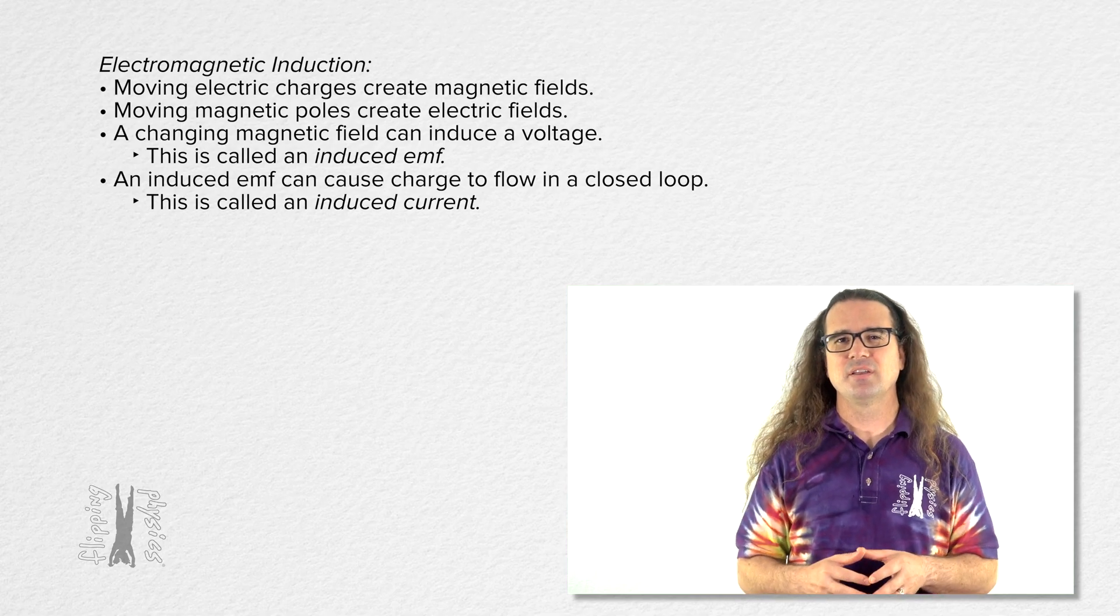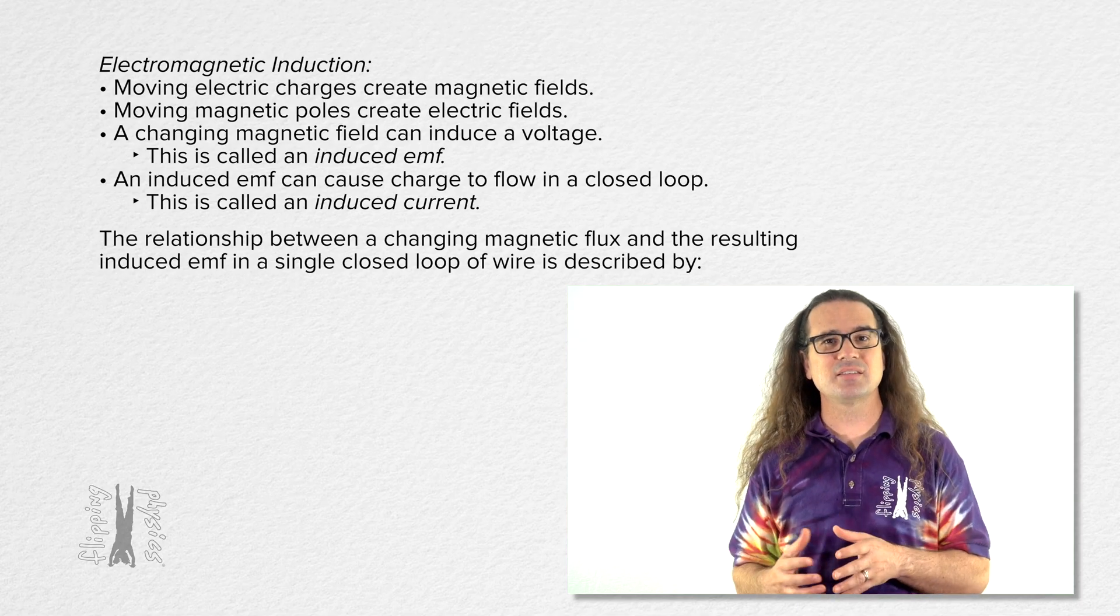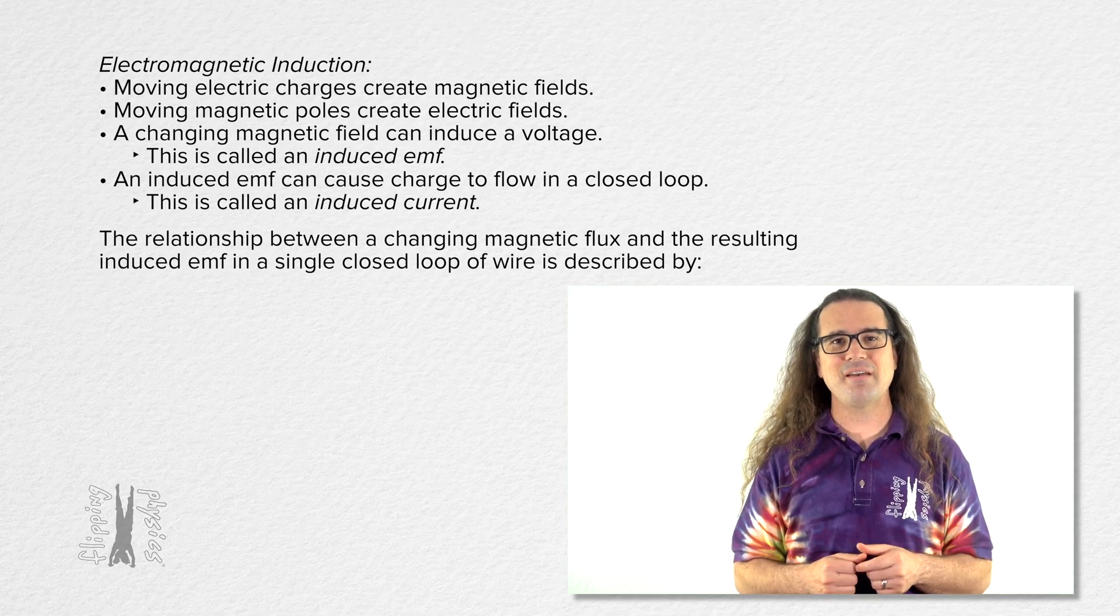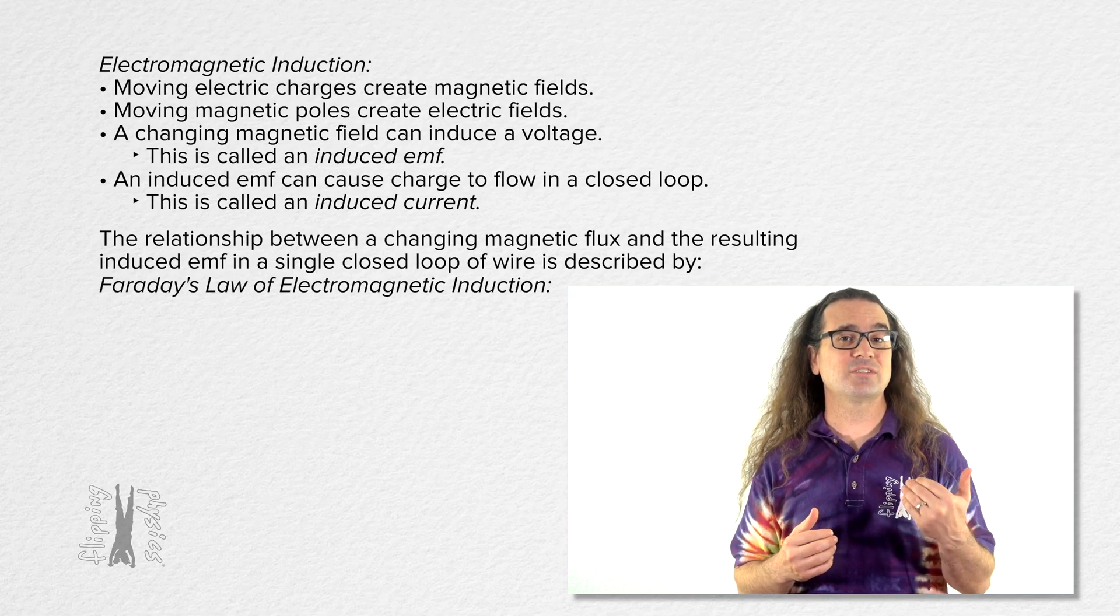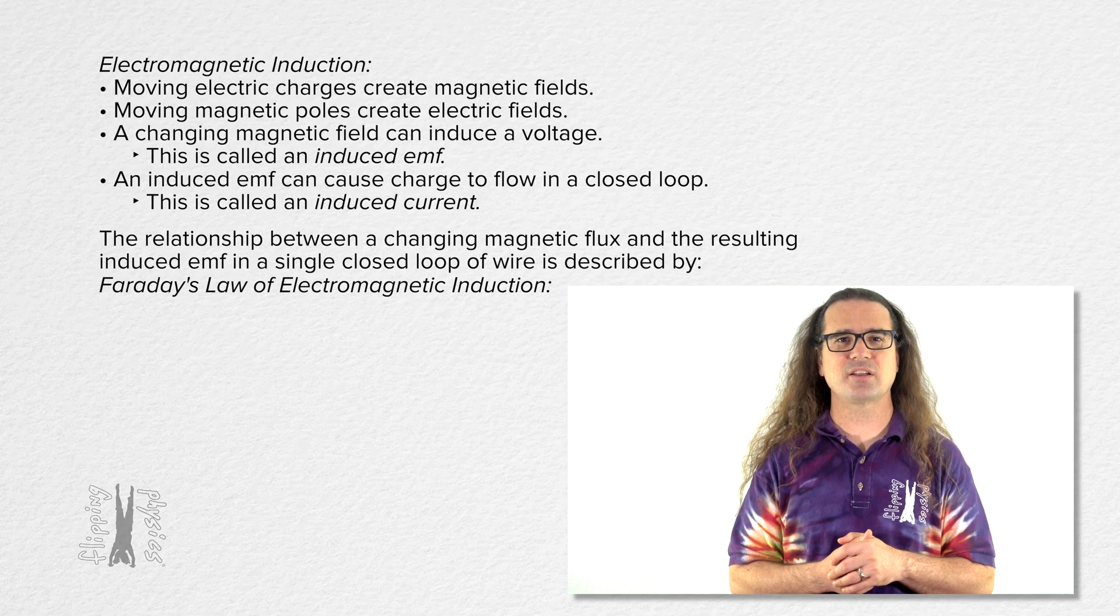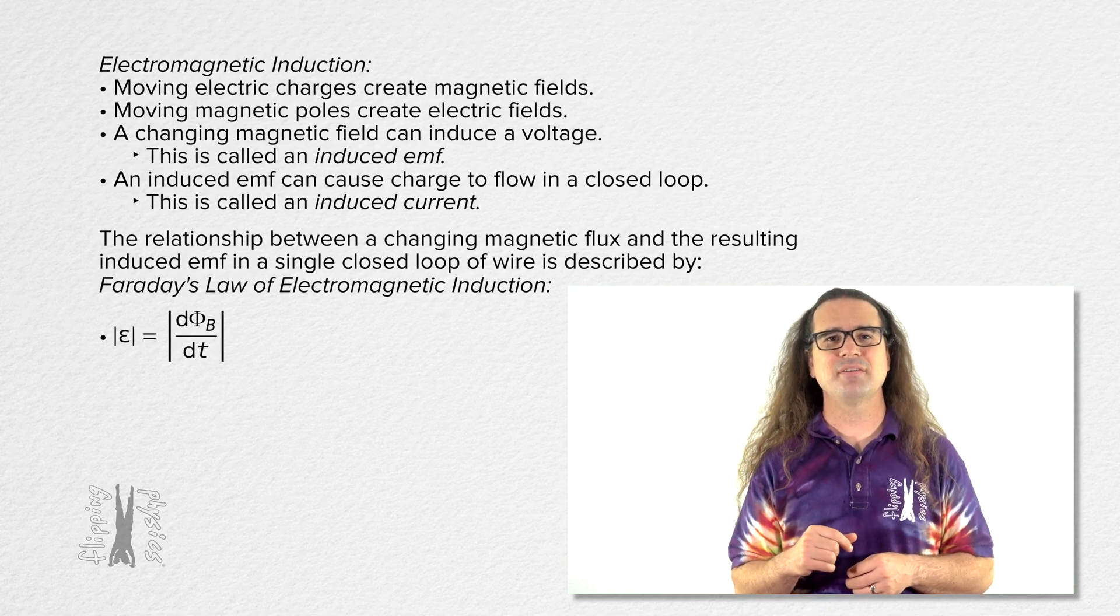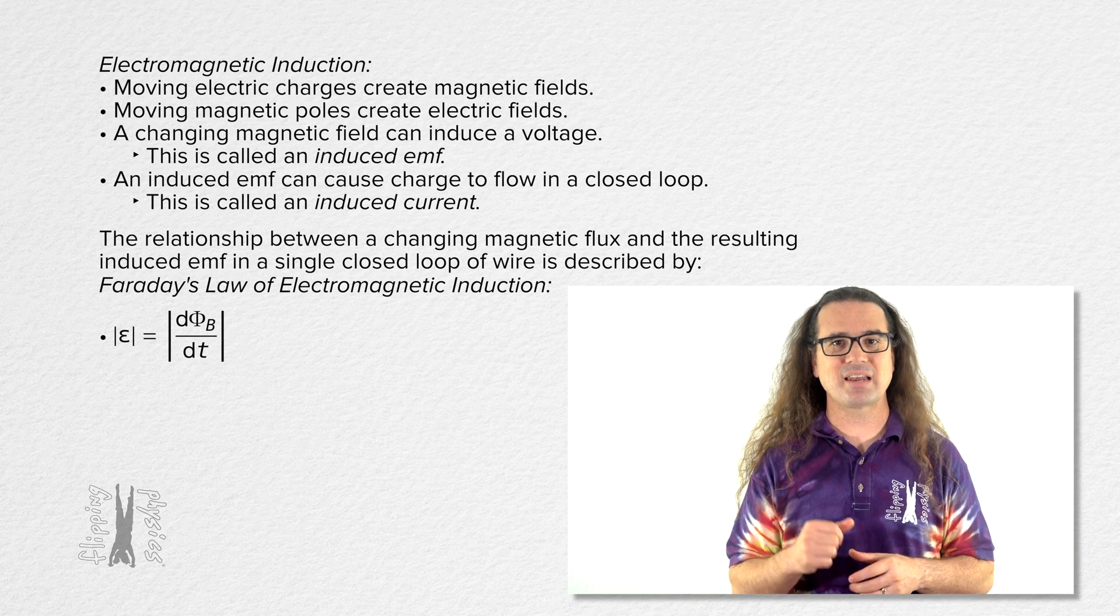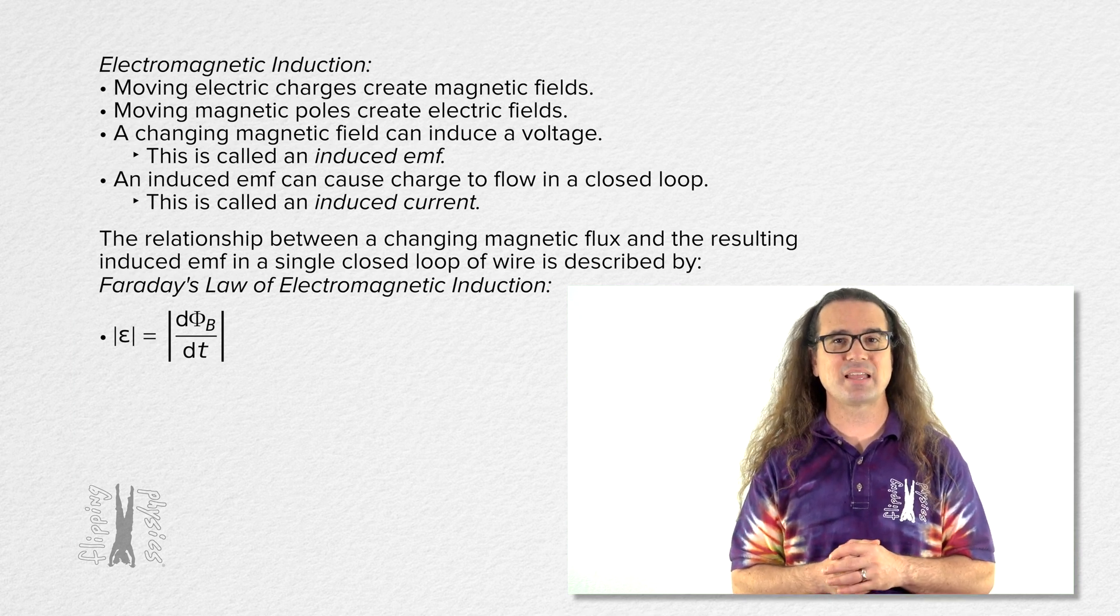More specifically, the relationship is between a changing magnetic flux and the resulting induced EMF in a single closed loop of wire and is described by Faraday's law of electromagnetic induction. The absolute value of the induced EMF equals the derivative of magnetic flux with respect to time, or the time rate of change of magnetic flux.